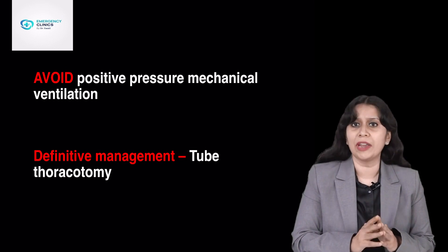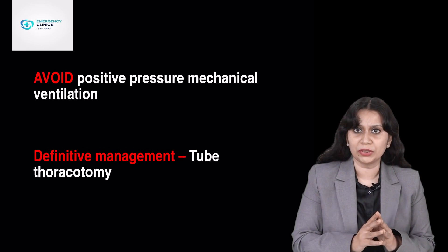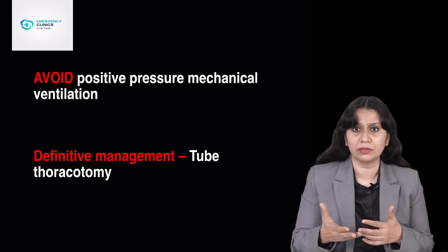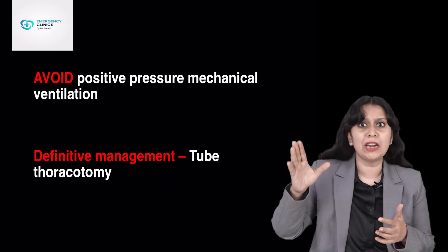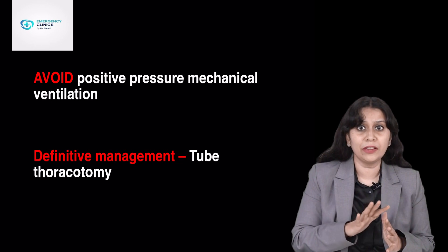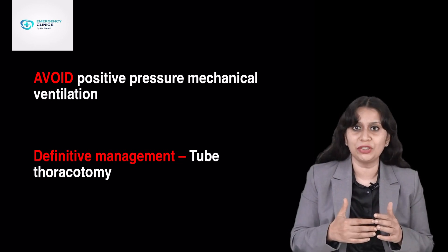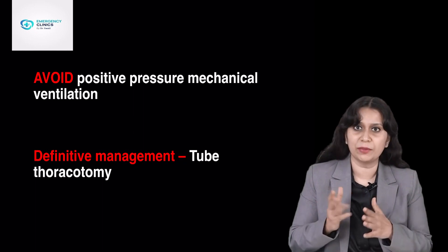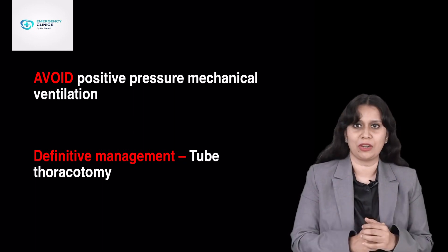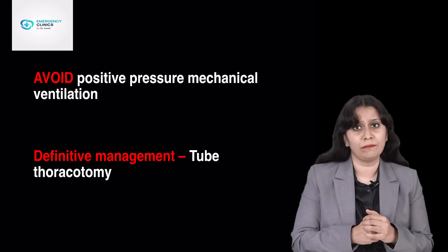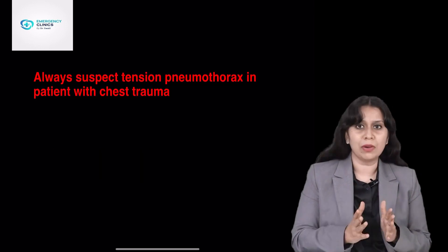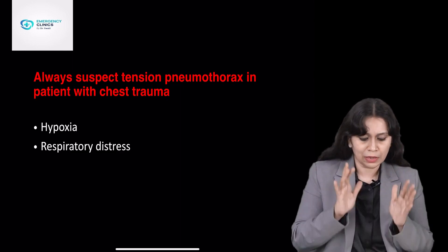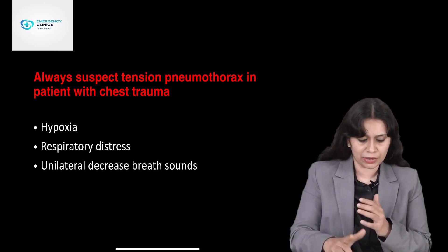One very important thing to be careful about: in a trauma patient with unilateral decrease in air entry, progressive hypoxia, tachypnea, and hypotension, tension pneumothorax should always come to mind and we should avoid positive pressure ventilation. We should never give positive pressure ventilation because it will further increase the intrapleural pressure by pushing more and more air into the pleura, causing the patient to deteriorate further. Avoid positive pressure ventilation. The ultimate definitive management is tube thoracostomy.